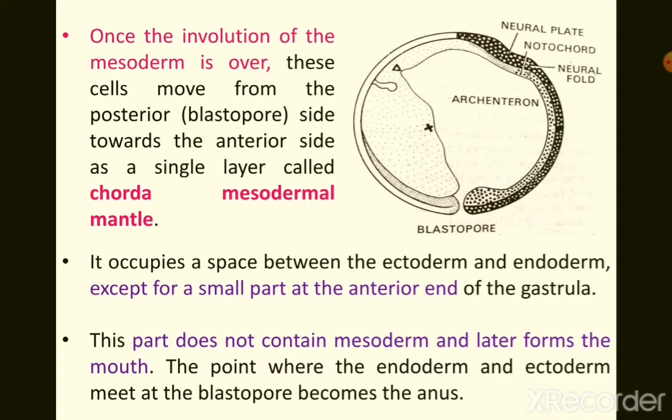Once involution of the mesoderm is complete, these cells move from the posterior side toward the anterior side as a single layer called the chorda-mesodermal mantle, occupying the space between ectoderm and endoderm. The anterior end of the gastrula — a small part — does not contain mesoderm and later forms the mouth. The point where the endoderm and ectoderm meet at the blastopore becomes the anus.